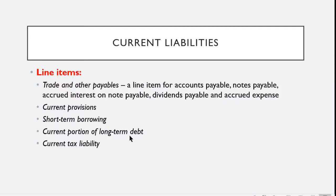Regarding the current portion of long-term debt: for example, you borrow and are going to pay within 10 years in installments — say 10 million payable over 10 years, so that's 1 million per year. The installment due next year, within 12 months from the statement of financial position date, that 1 million is called the current portion. The remaining 9 million, payable in the years beyond 12 months, is the non-current portion.